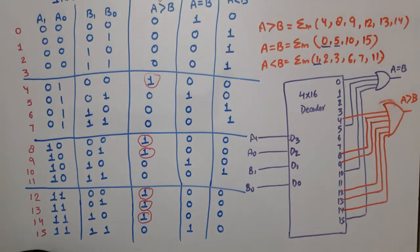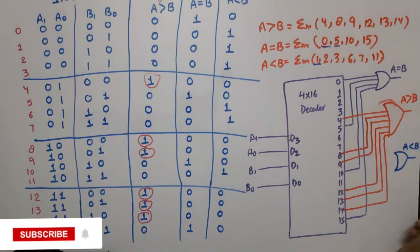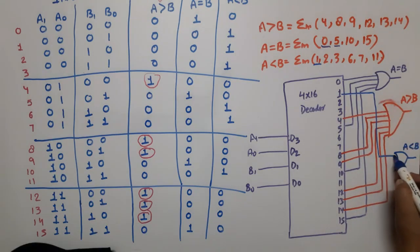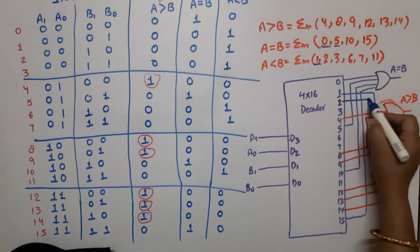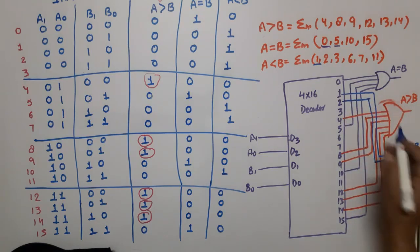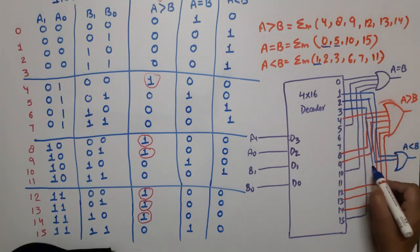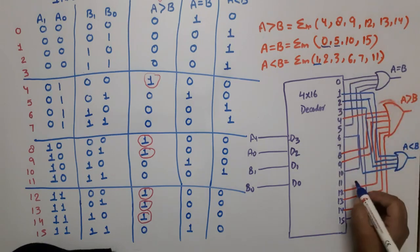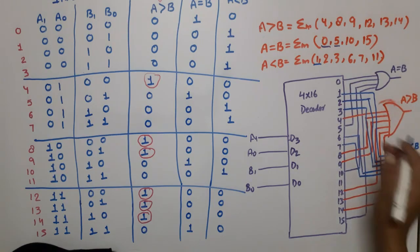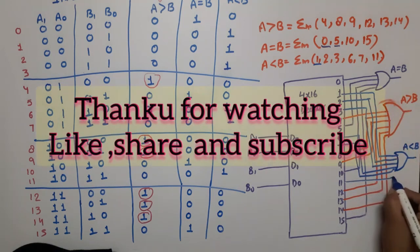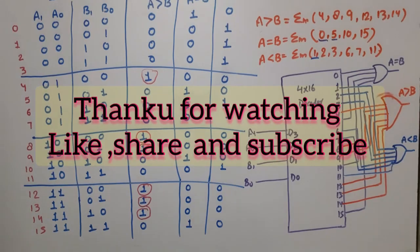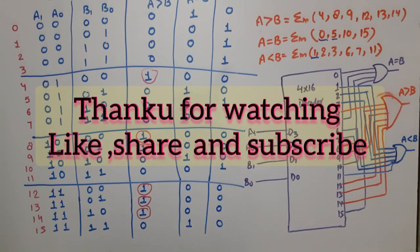For A less than B, we connect outputs 1, 2, 3, 6, 7, and 11 through an OR gate. So this is the final circuit of a 2-bit comparator using a decoder. Thank you so much. If you still have any doubt, please write down in the comment section. Thank you.